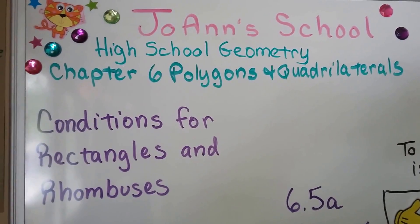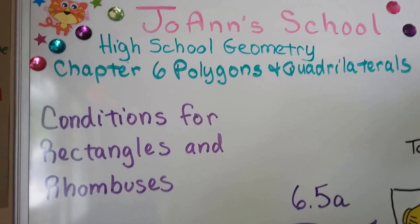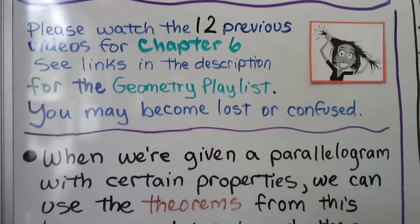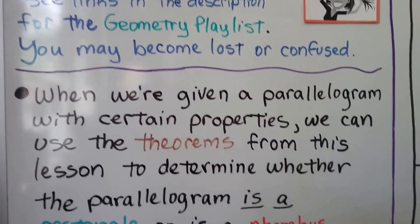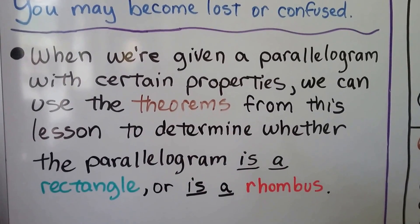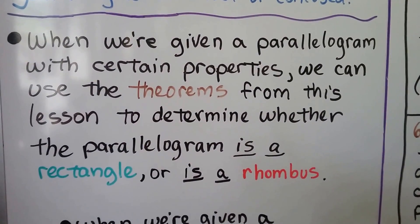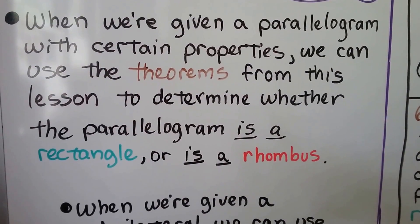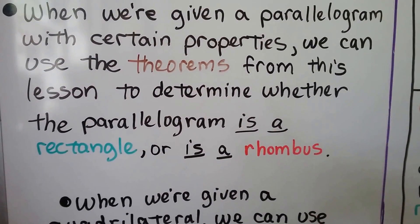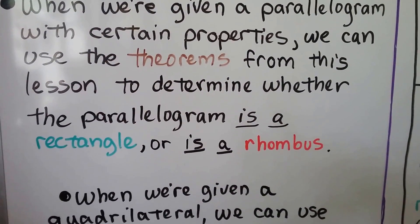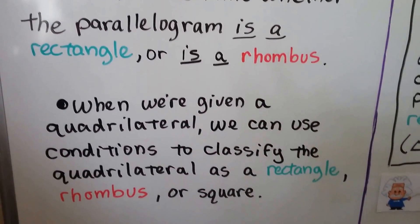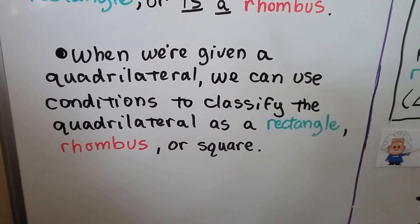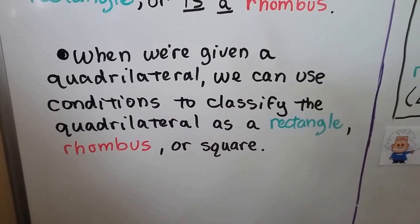Conditions for rectangles and rhombuses — this is lesson 6.5a. We have 12 previous videos for Chapter 6 in the Geometry Playlist. When we're given a parallelogram with certain properties, we can use the theorems from this lesson to determine whether the parallelogram is a rectangle or a rhombus. When we're given a quadrilateral, we can use conditions to classify it as a rectangle, rhombus, or square.